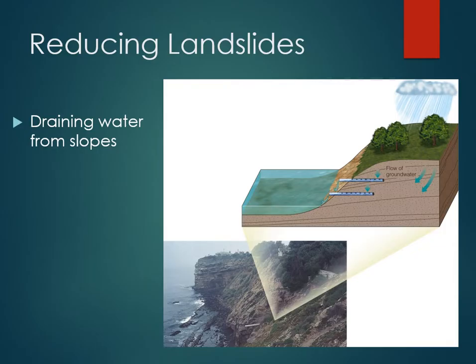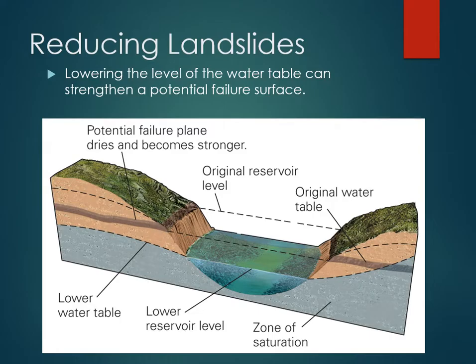One of the biggest things we can do is just drain water from the slope. We looked at a number of reasons why water actually makes the slope a lot more unstable, so if you remove the water, it reduces a lot of that risk. You can do that with pipes — you put pipes under there and drain the water out, as you can see in the bottom picture. We can also lower the water table level, which can strengthen a potential failure surface. If there's a particular failure plane in the rocks — like a layer of clay or shale — that you don't want wet, you lower the water table locally and hopefully that prevents some landslides.